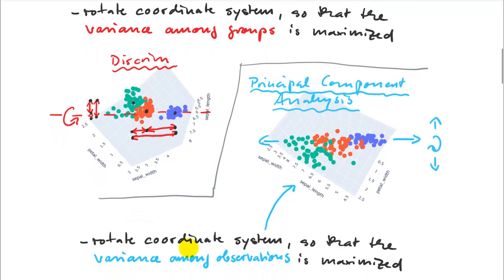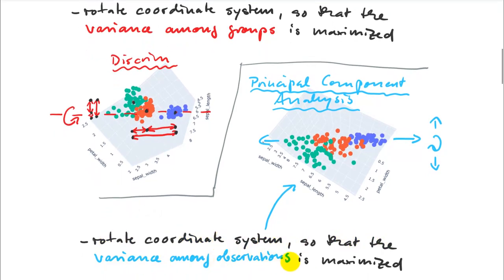In PCA, we want to stretch the data set out first in one direction as much as possible for the first principal component, then rotate around that axis for the second component, and continue in multivariate space for a third, fourth, and fifth axis. The same idea applies to canonical discriminant analysis, except here the objective is to maximize the variance among groups.